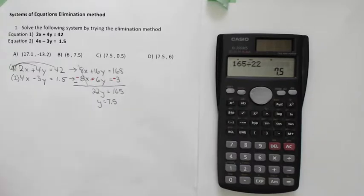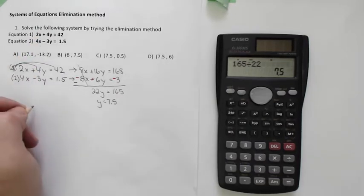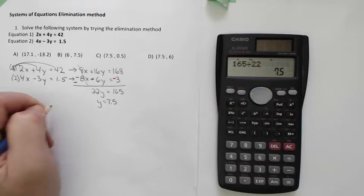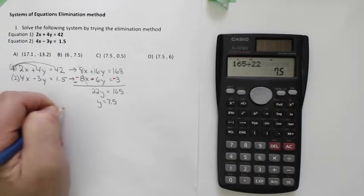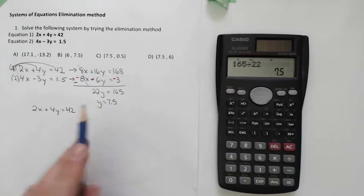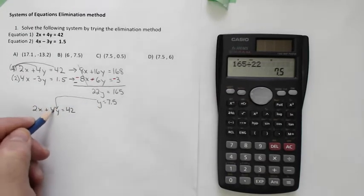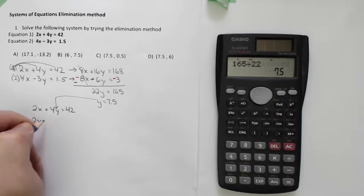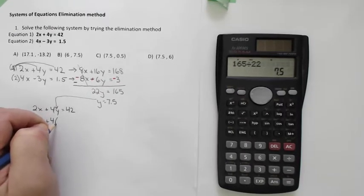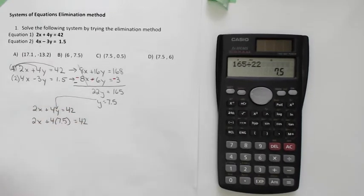So now that I know my y, I've got to go ahead and get my x. Now how do I do that? Well, you have to do it with substitution. I can pick either one of these. It doesn't matter which one you pick. I'm going to write one of them down. 2x plus 4y equals 42. And I'm just going to take that y is equal to 7.5 and I'm going to pop it right in where the y is. Don't drop the 4. You still need that 4. 2x plus 4 times whatever y is, 7.5, equals 42.